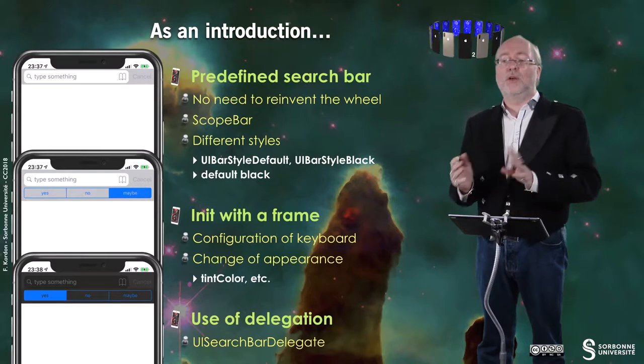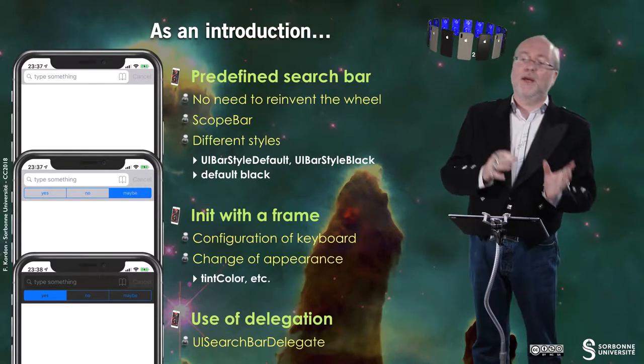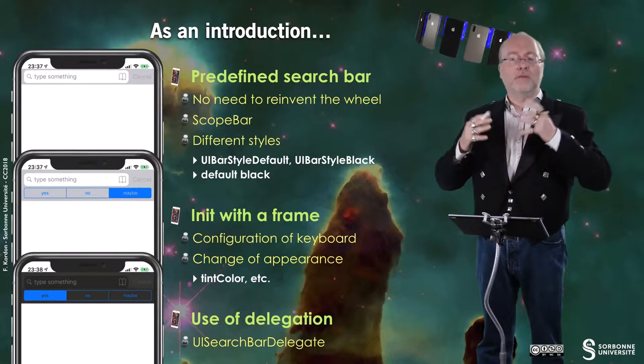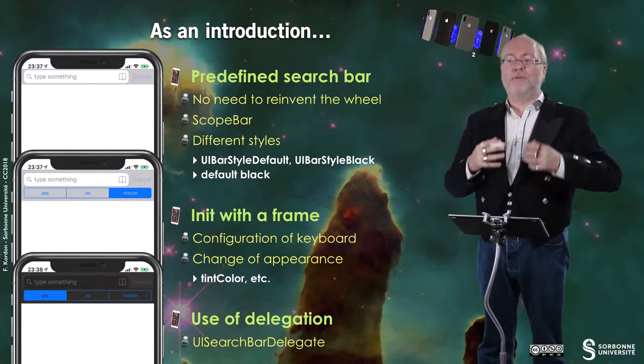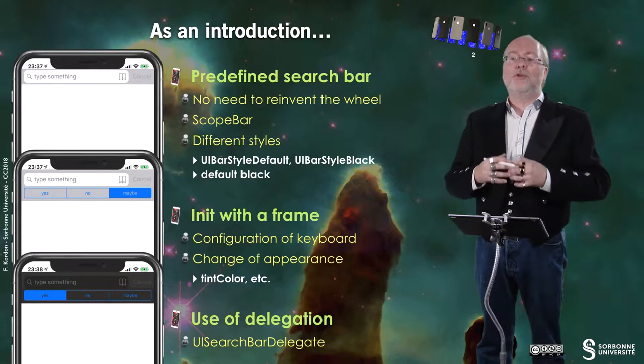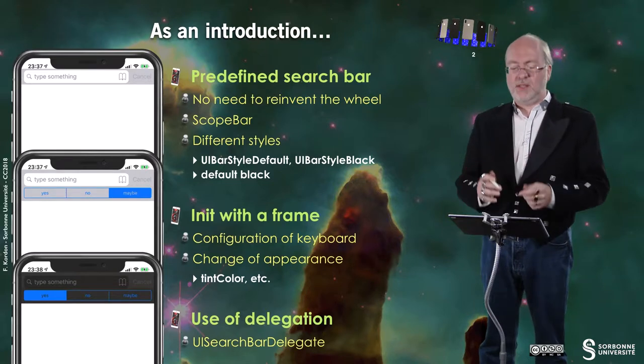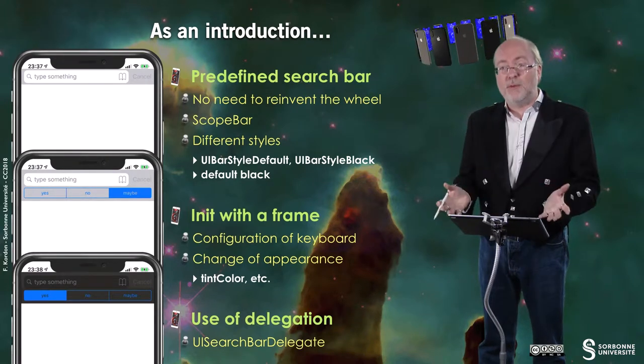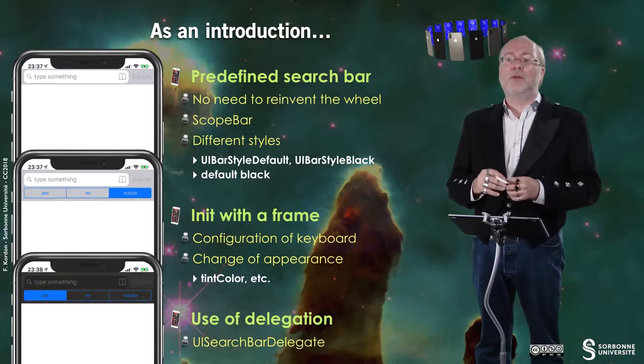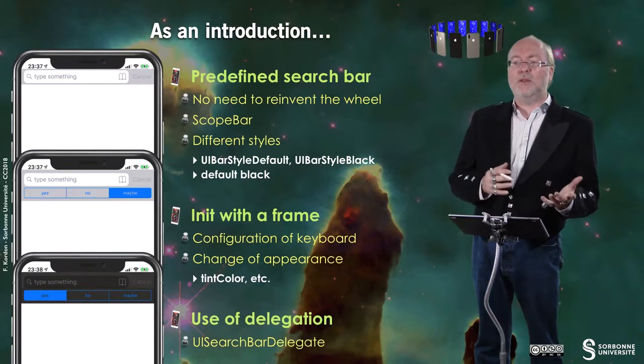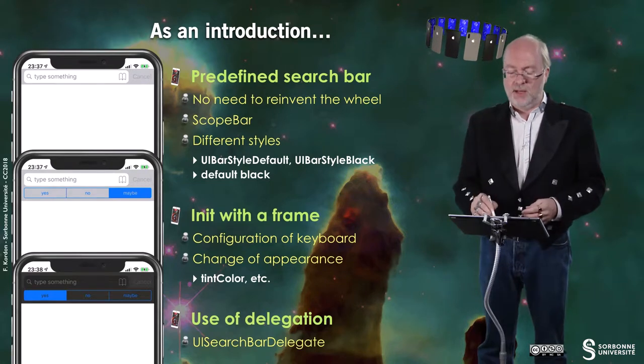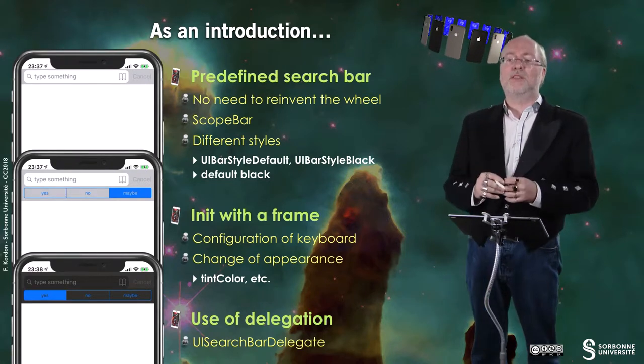And of course, you can have the scope part either in default mode or in black mode. You need it in a very classical way with a frame. You can configure the keyboard that is associated to the search you will do. Because if you tap in this area, then you have a keyboard that appears. And you can also change the appearance. You can change the tint color, the background, etc. I'll let you have a look on the Fantastic Manual for that.